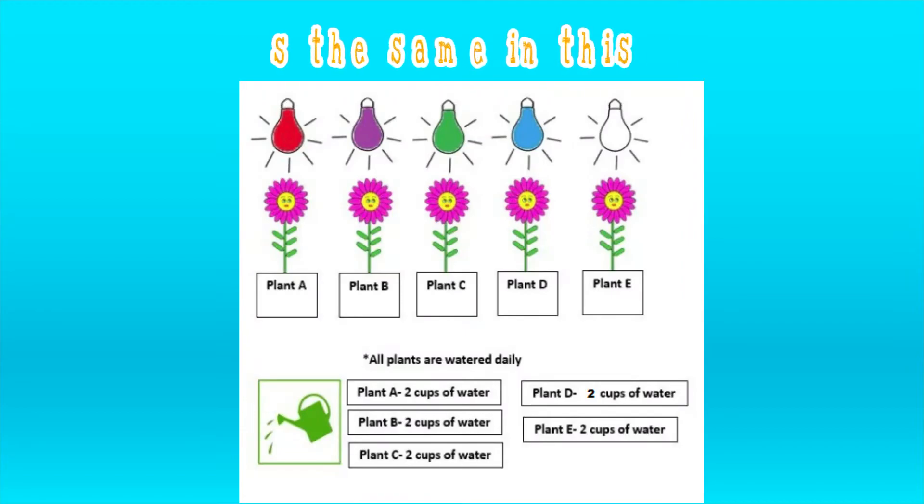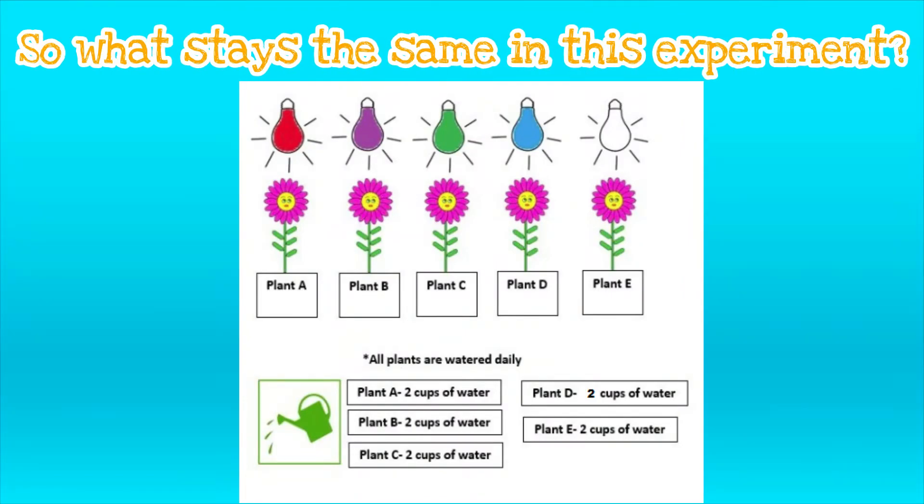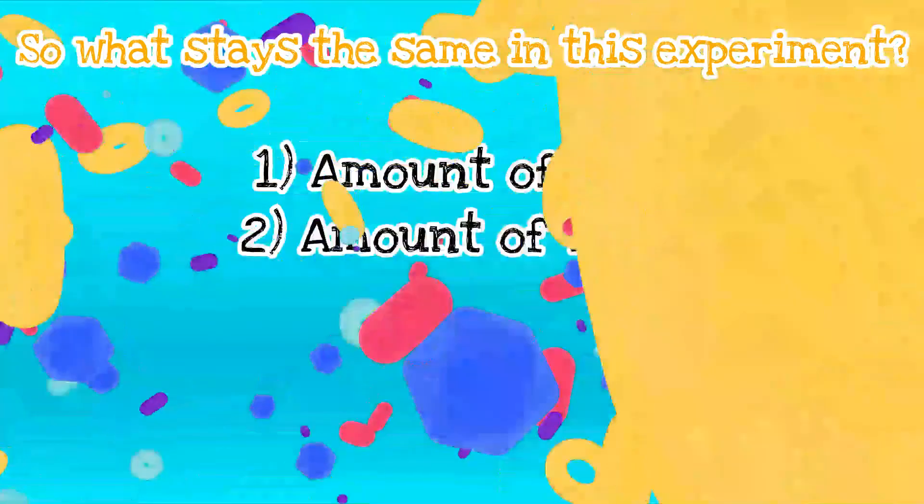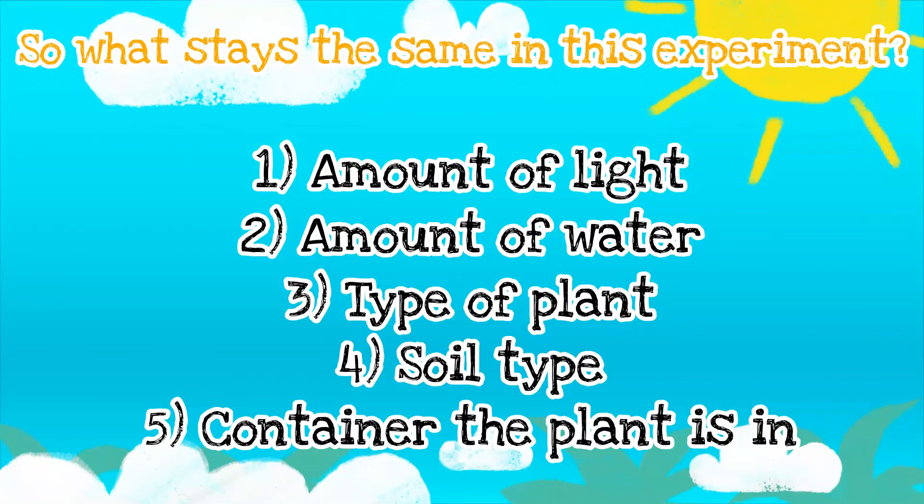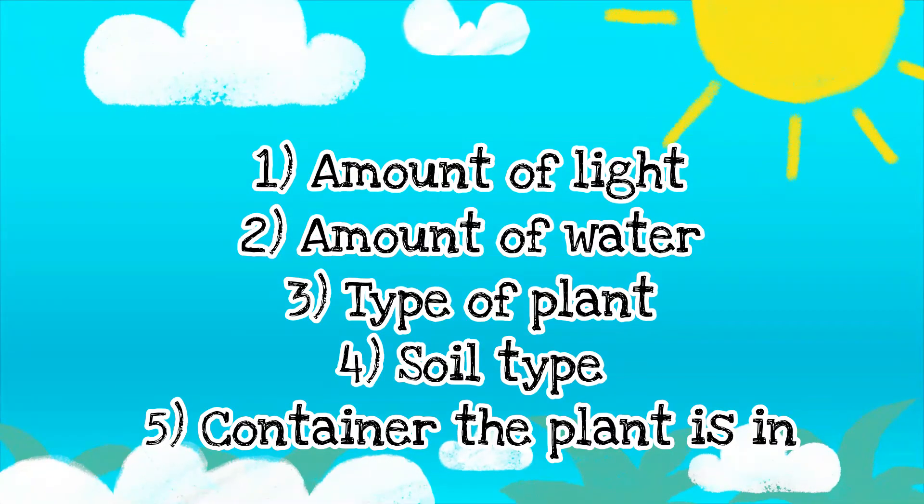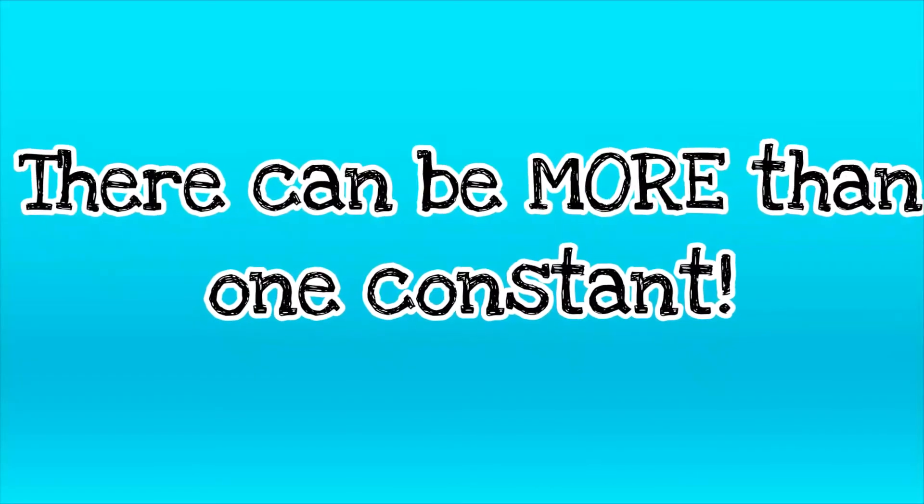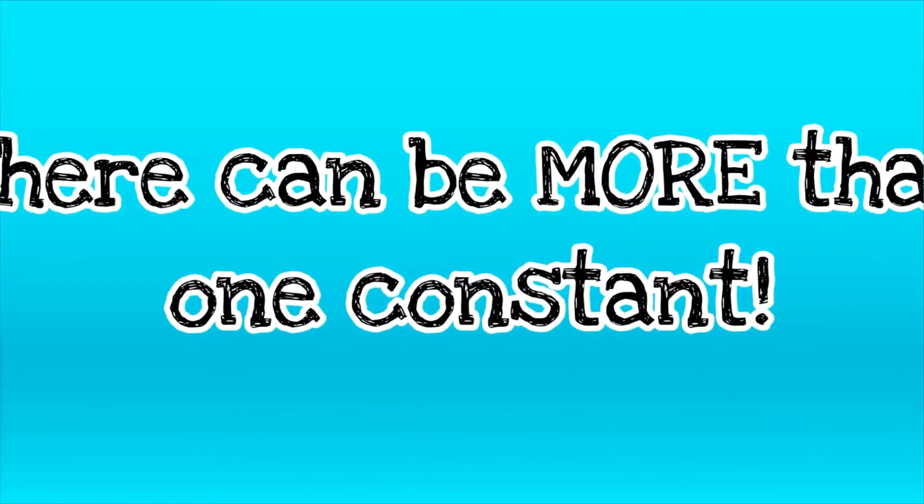What will stay the same in our plant experiment? Well, the amount of sunlight, the amount of water, the type of plant, type of soil, and even the container the plant is in will need to remain constant. Now there can always be more than one constant in an experiment.